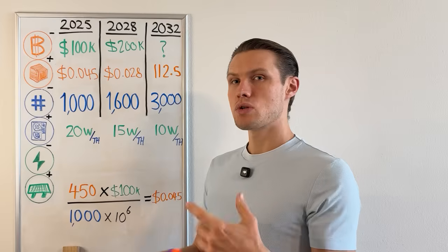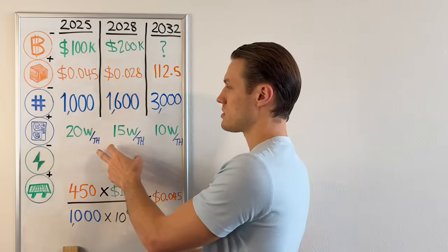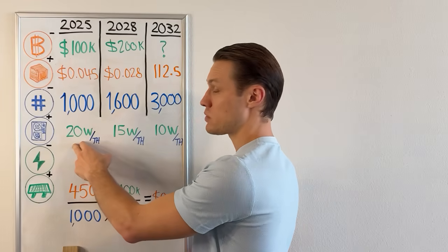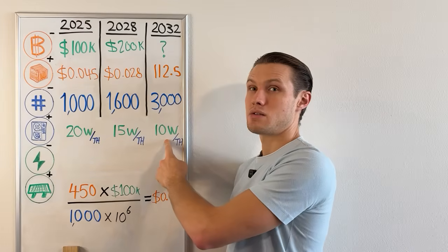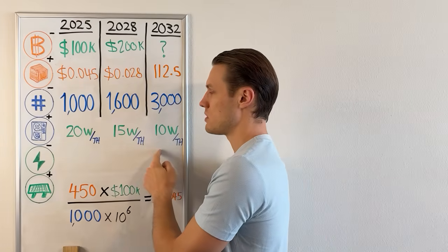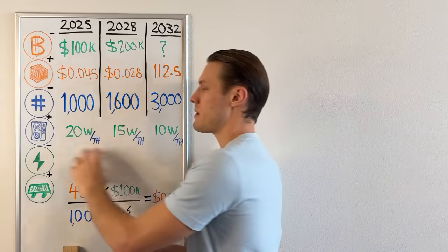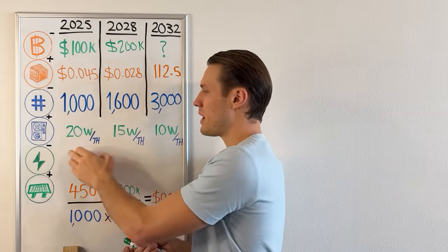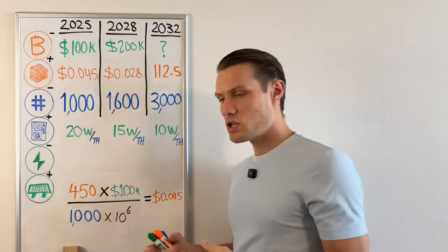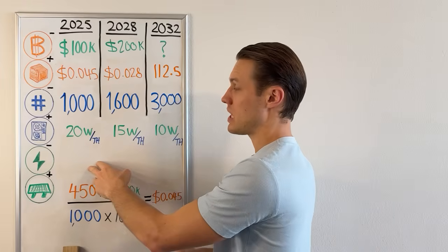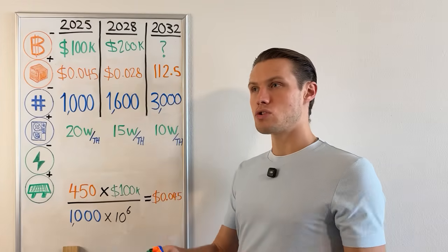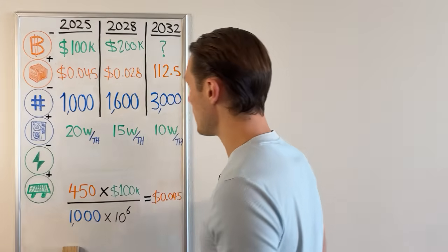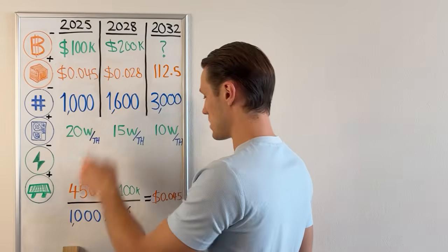That hash rate growth comes from miners replacing older machines with newer, more efficient ones. The average network efficiency right now is 20 watts per terahash, but new machines coming out are under 10 watts per terahash — twice as efficient, using the same power but producing twice the hash rate. On top of that, old machines aren't simply being thrown away; they're becoming heating systems, which is an entirely new and emerging area of Bitcoin. That covers the second scenario — now let's get to the third.